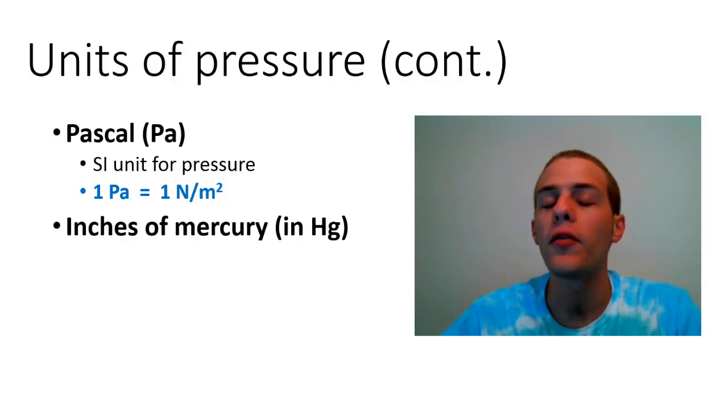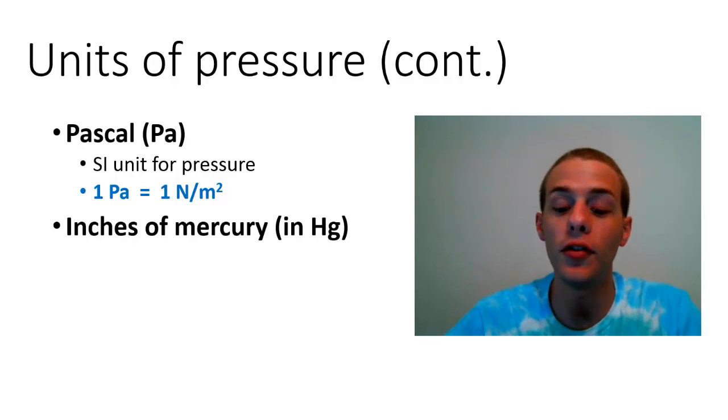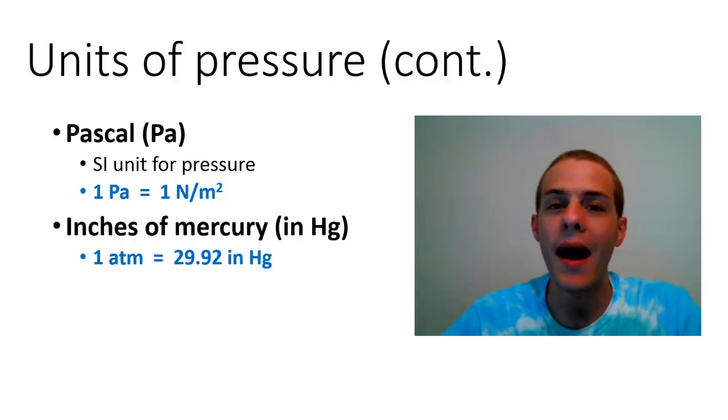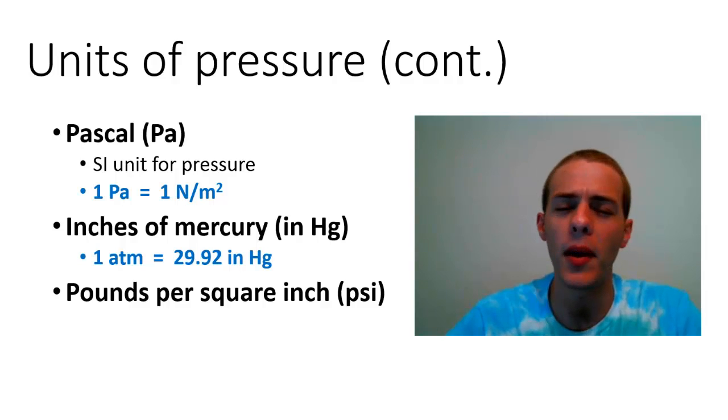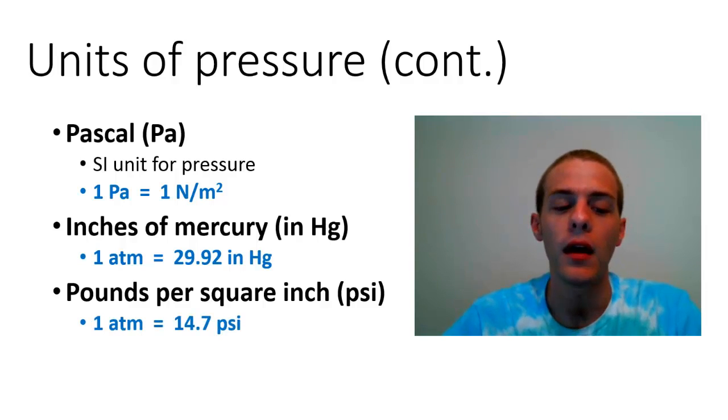Another very common unit of pressure is inches of mercury. The relationship between atmospheres and inches of mercury is one atmosphere equals 29.92 inches of mercury. Finally, the last unit of pressure I'm going to talk about is pounds per square inch, otherwise known as PSI. This is the most common unit, at least here in America, that we use for tire pressure. One atmosphere equals 14.7 pounds per square inch.